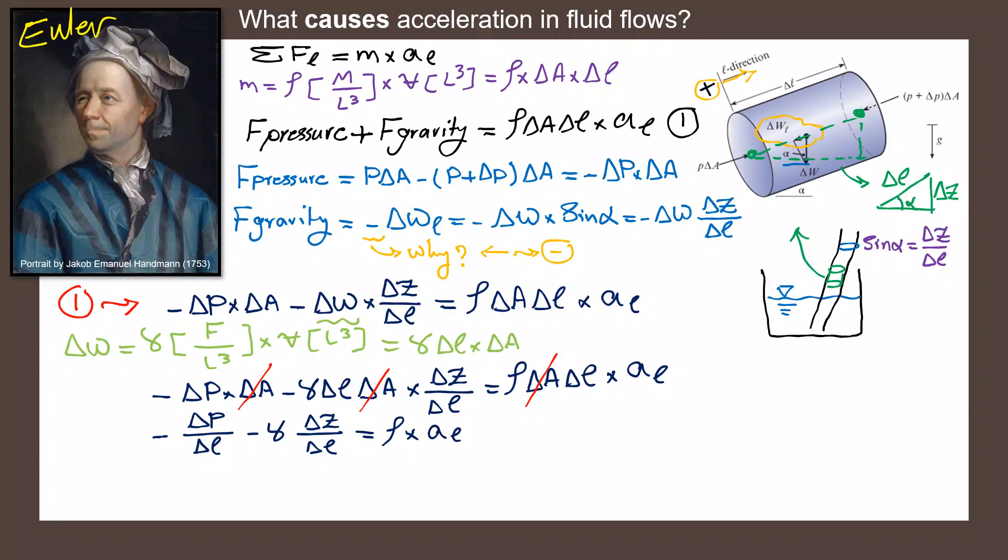Now, if I assume that ΔL approaches zero, then I can rewrite the equation in terms of differential equations. So it would be dP/dL minus γdZ/dL equals ρAₗ. Now, to just organize that equation again over here, I'm going to write it as negative d/dL of (P + γZ) equals ρ times Aₗ.